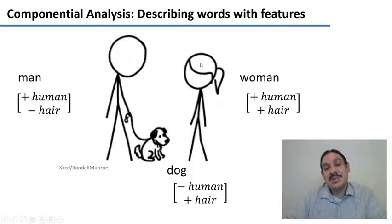If you wanted to describe woman, it would be a human with hair. Because in this particular universe, the woman does have hair and the man does not. And if you wanted to describe the dog, you could describe dog as minus human and plus hair because you can see that the puppy has a little bit of hair.